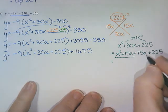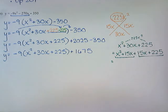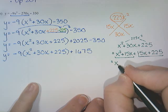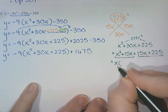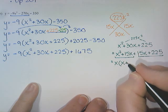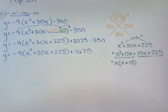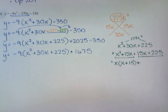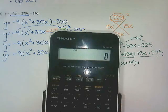And then we group: x squared plus 15x and 15x plus 225. The x squared and the 15x both have an x. x squared divided by x is x, and 15x divided by x is 15. From the second pair, first I take the sign from what's in between them, that's a plus sign. 15 and 225, 225 divides by 15.